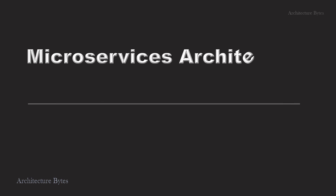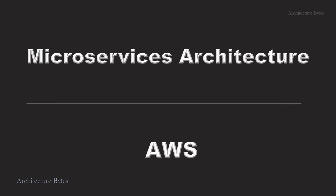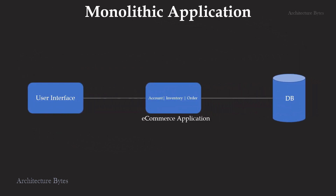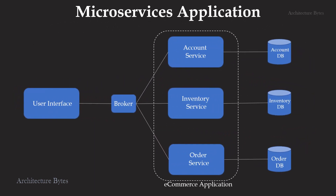Microservices Architecture on AWS. Here's a simple e-commerce monolithic application that has a user interface, a server-side application with accounts, inventory and order functions, and a database. Here's the same application using microservices — individual functions are modeled as separate microservices. Every service owns and maintains its own data. There is a broker in the front to route client requests to services. This is what a basic microservices application would look like.